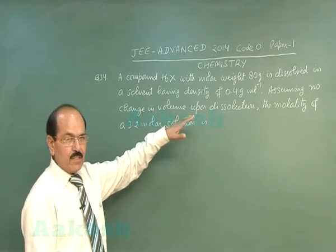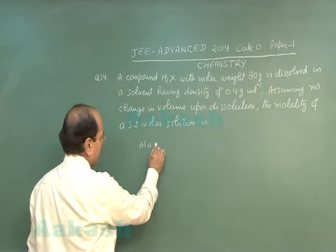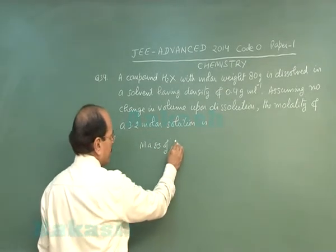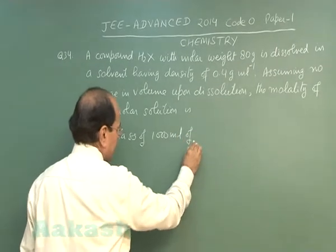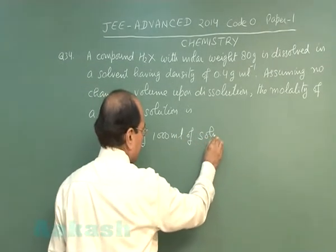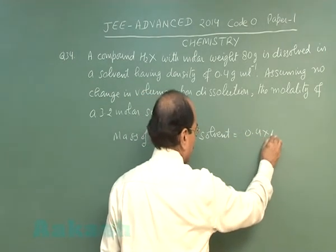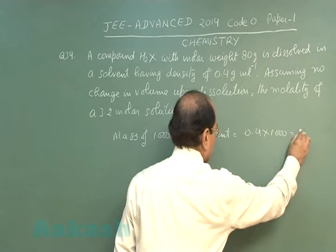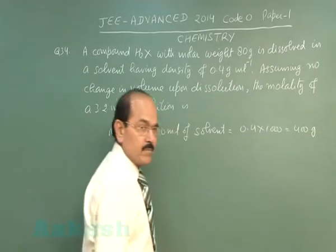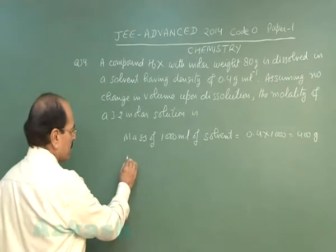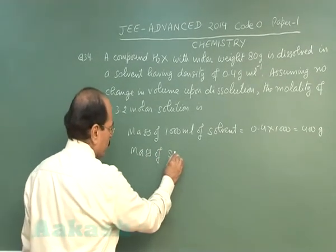We have been given the density of the solvent. The mass of 1000 milliliter of solvent will be 0.4 into 1000, that is 400 gram.